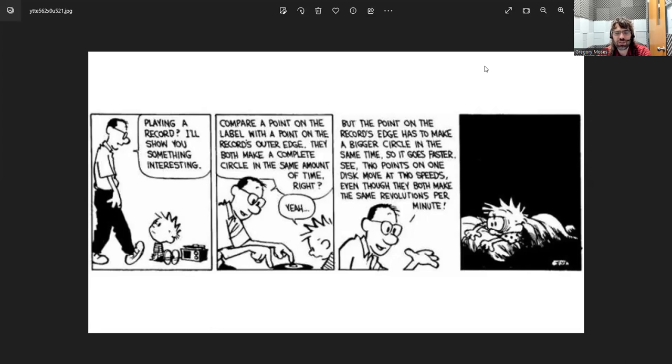Calvin's dad in this comic is looking at a spinning record, so a spinning disc, and he says, look at a point near the inside of the disc, and look at a point near the outside of the disc. These points are spinning together, so they'll make a complete rotation in the same amount of time, but the point out here has to travel further to make a complete circle than the point here does.